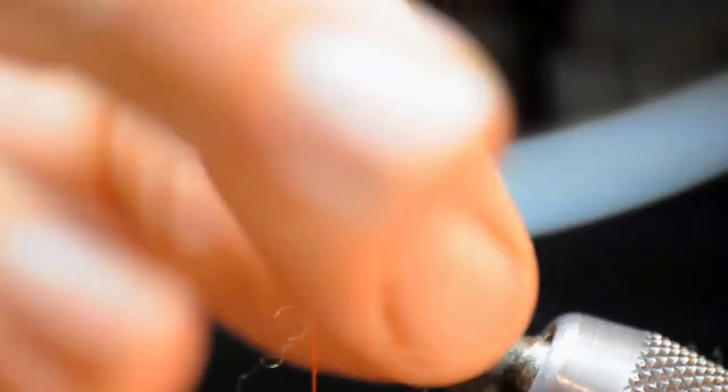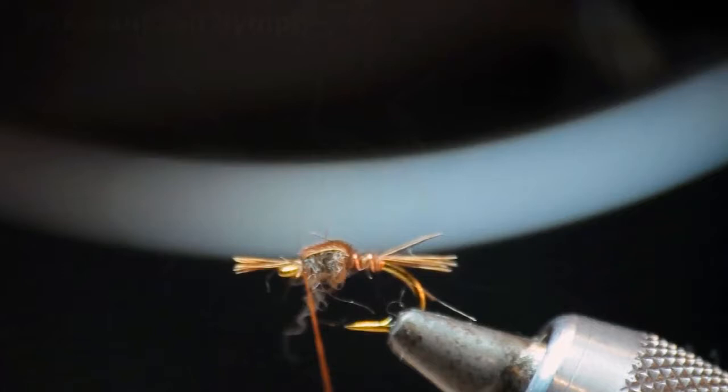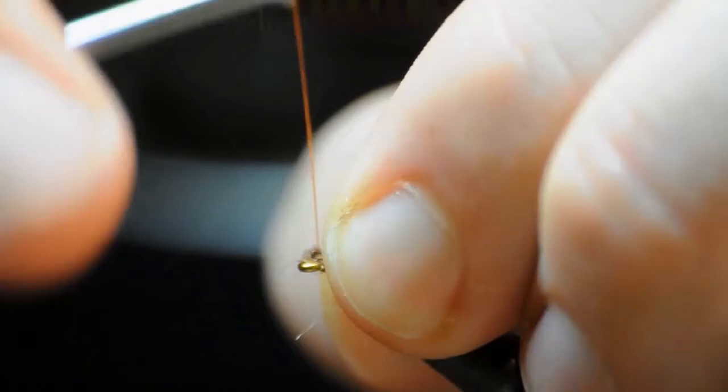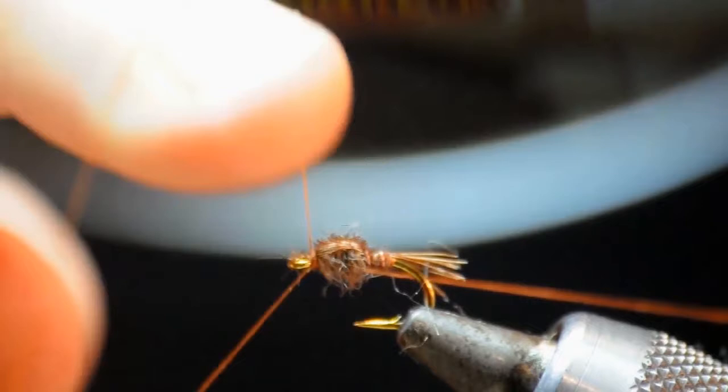I'm going to fold the pheasant tail fibers forward to form the wing case and secure them. Now I'm going to fumble in trying to bend the tips back. I could have given myself just a little more to work with there. But they're folded back to represent the legs down the thorax of the fly and then secured with a few wraps up front and a quick whip finish and this fly is done.